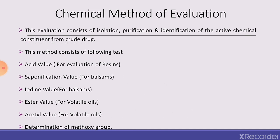First, we will discuss the chemical method of evaluation. As its name suggests, it consists of chemical tests and isolation, purification and identification of the active chemical constituents from the crude drug. This method consists of different tests such as acid value, saponification value, iodine value, ester and acetyl value, and determination of methoxy groups. Acid value can be used for the evaluation of resins; saponification and iodine value for balsams; ester and acetyl value for volatile oils.